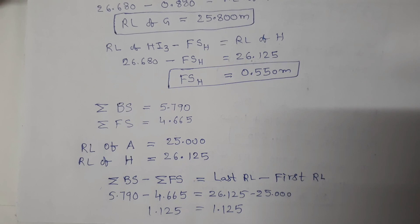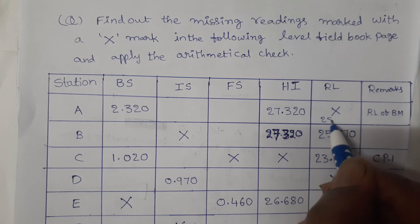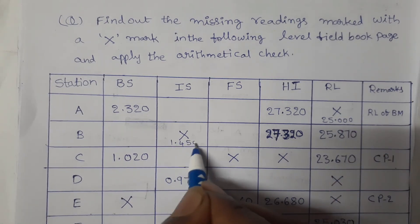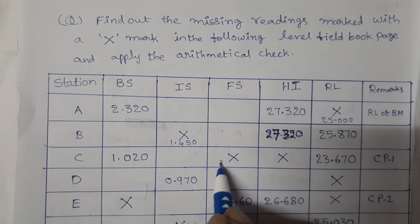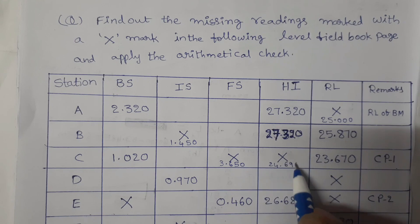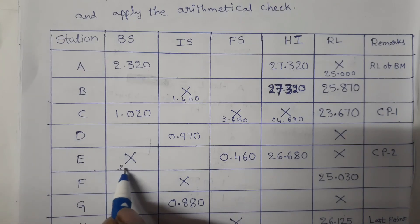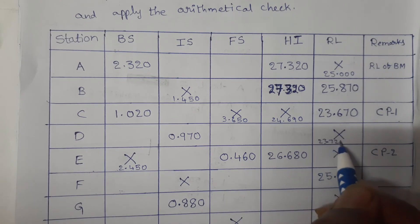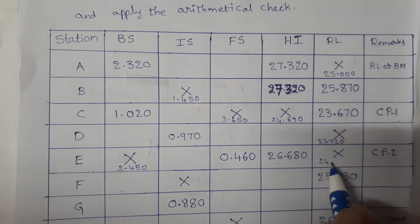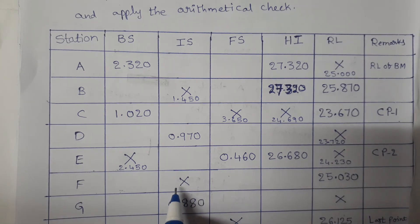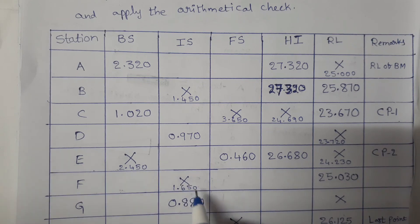Now enter all the readings in the level field book. RL of A is 25.000, IS on B is 1.450, FS on C is 3.650, RL of HI2 is 24.690, BS on E is 2.450, RL of D is 23.720, RL of E is 24.230, intermediate sight on F is 1.650.